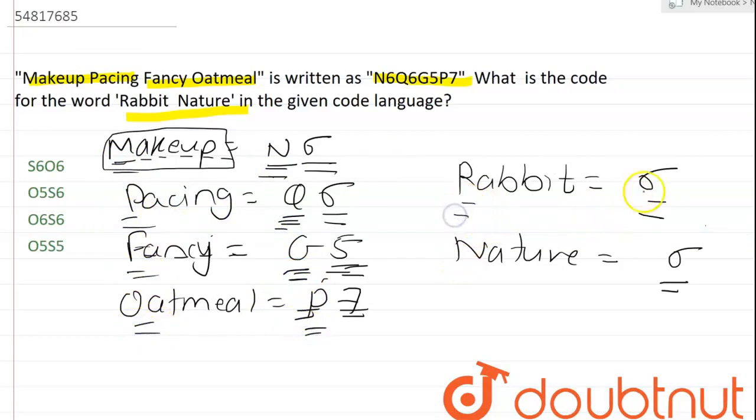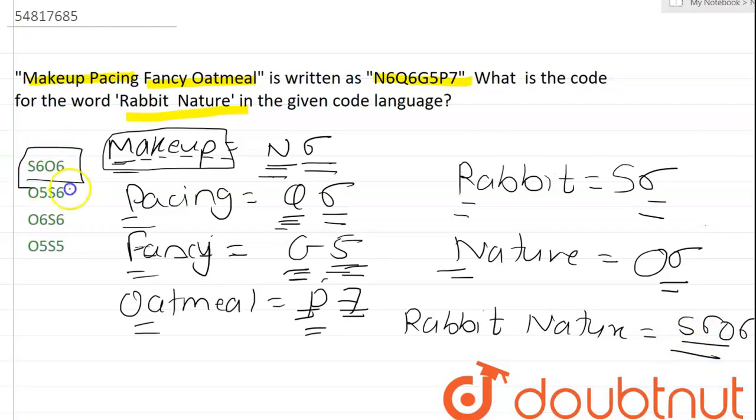Therefore, after R there is S, and after N there is O. So in the code language, rabbit nature is equal to S6O6. This is the right answer: S6O6.